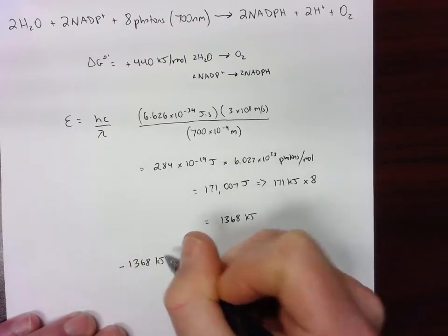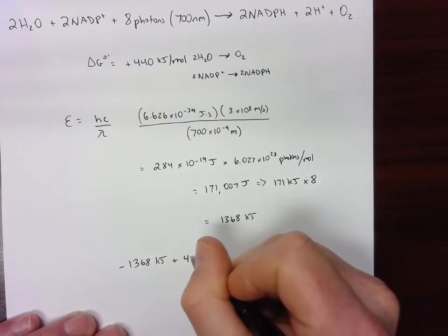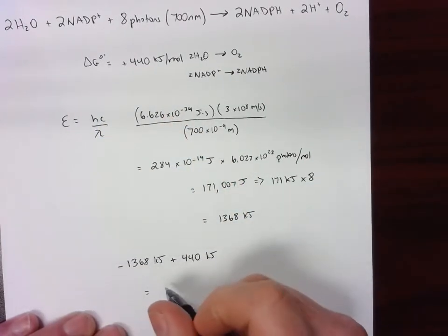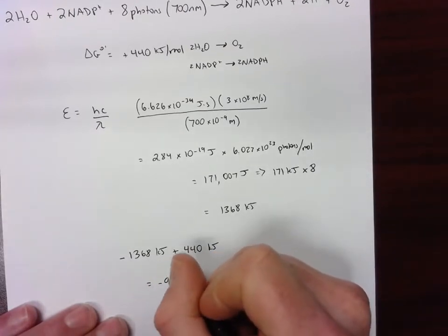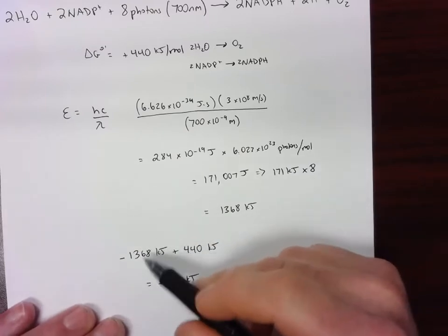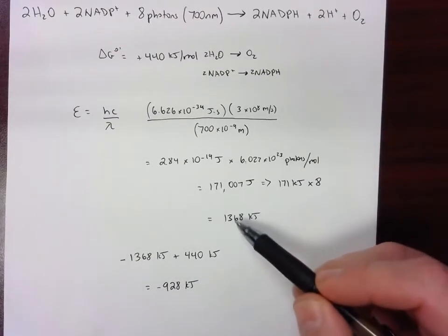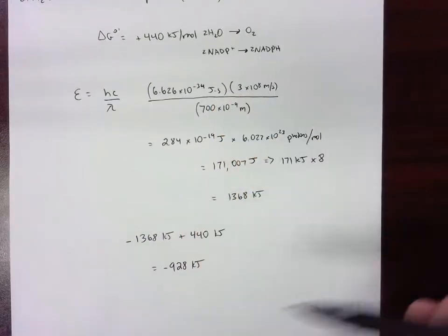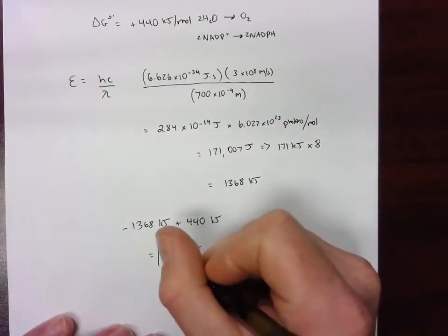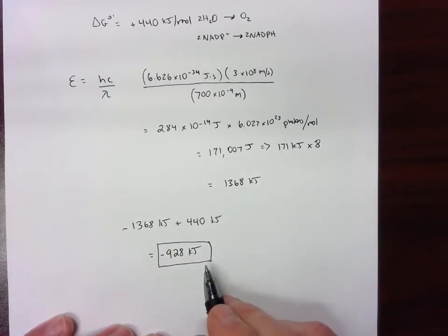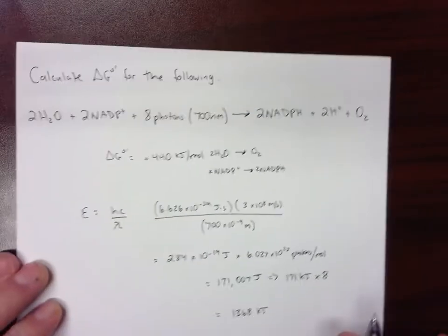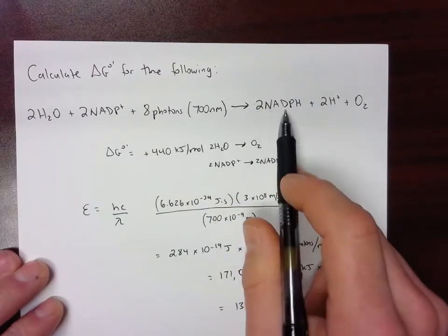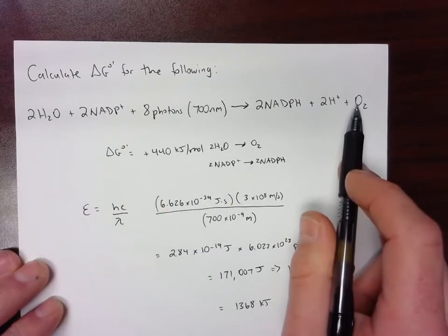So negative 1368 kilojoules plus our 440 kilojoules from here is going to give us the sum total of the reaction with light involved, assuming 100% efficiency. It's not really 100%, not all of the light energy is going to get turned into reducing energy, but assuming 100%, look at that, very exergonic, which will make this process spontaneous. So this is what drives—the light is what drives the reduction of NADP plus to NADPH which is used in the Calvin cycle and converts water into oxygen.